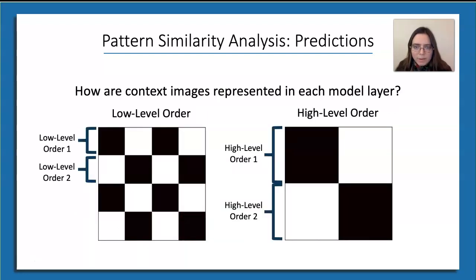Once the model was trained, we examined patterns of activity in response to each of the context images in isolation, at each of the three different recurrent layers in the network. We wanted to see whether the model would be grouping context images based on shared low-level or high-level order assignment. We predicted that shallower network layers would be more sensitive to the low-level order assignment, whereas deeper network layers would group context images based on their high-level order assignment.